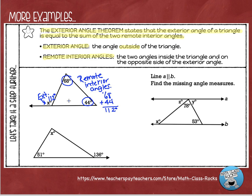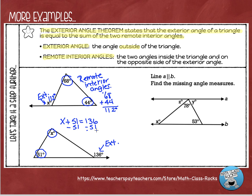The next example is a little different. We have our exterior angle, which is 136 degrees, and they're not asking us to find the exterior angle — they're asking for one of the remote interior angles. These two interior angles together must equal 136. So the equation is: x plus 51 equals 136. Subtracting 51 from each side gives me x equals 85. So the missing angle is 85 degrees.